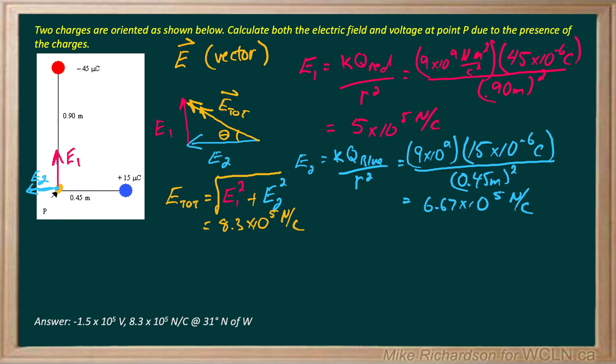Now if I want to find the direction or the angle, I can simply go, looking at my diagram, tan theta is opposite which is E1 all divided by adjacent which is E2. So I'd go second function or inverse tan of 5 times 10 to the fifth divided by 6.67 times 10 to the fifth, and I end up getting an angle of 31 degrees and that would be north of the west line.